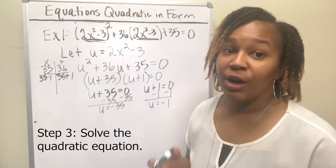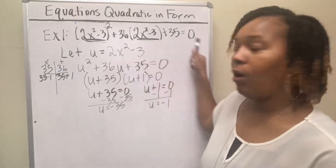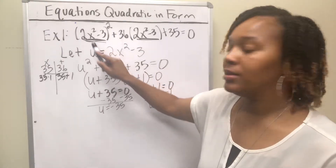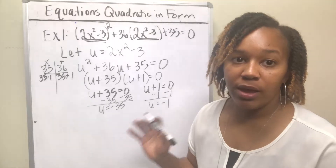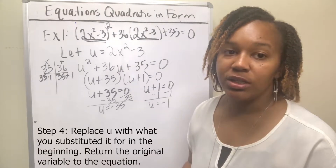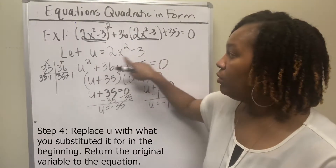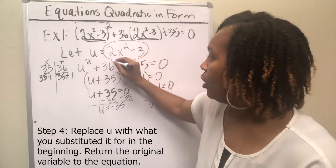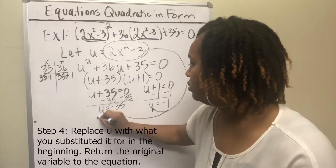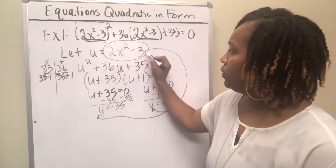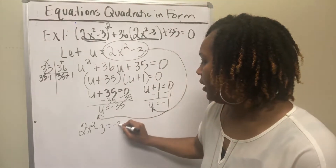Now we're done solving the quadratic equation, but we're not done solving the whole equation because we really want to solve for x, and what we have here is u. So the next step is we need to go back and put the x's back in the equation. The way we do that is we replace u with what we let it equal — we let u equal 2x² − 3 — so we plug that back in for each of these u's. Replace u with 2x² − 3, getting x out of the equation and putting x back in it.